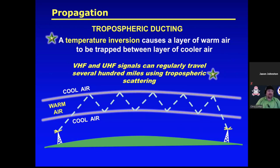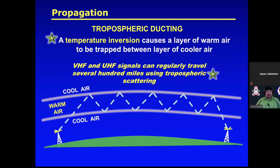Tropospheric ducting is an interesting phenomenon — a temperature inversion causes a layer of warm air to be sandwiched between cooler air. UHF and VHF signals get trapped in there and function just like a fiber optic cable, bouncing back and forth for long distances. For example, the Hearst Club's 147.1 repeater in North Texas has a repeater about 600 miles away on exactly the same frequency.